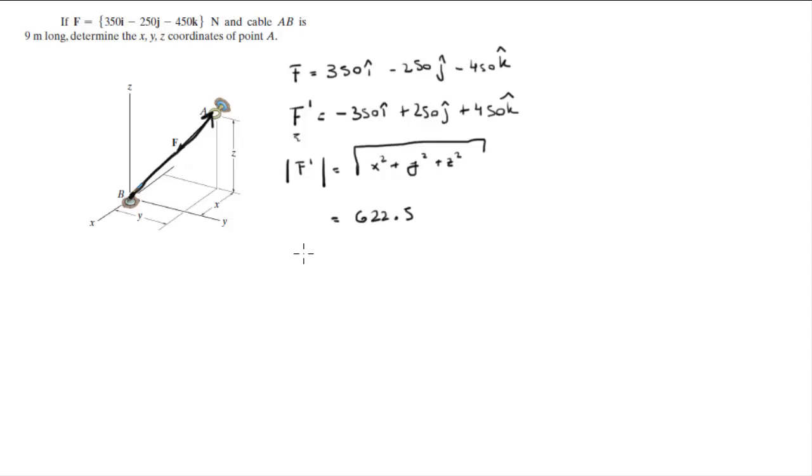Now you can find the direction angles simply by doing the cosine inverse of the x over the magnitude, cosine inverse of the y over the magnitude, and cosine inverse of the z over the magnitude.